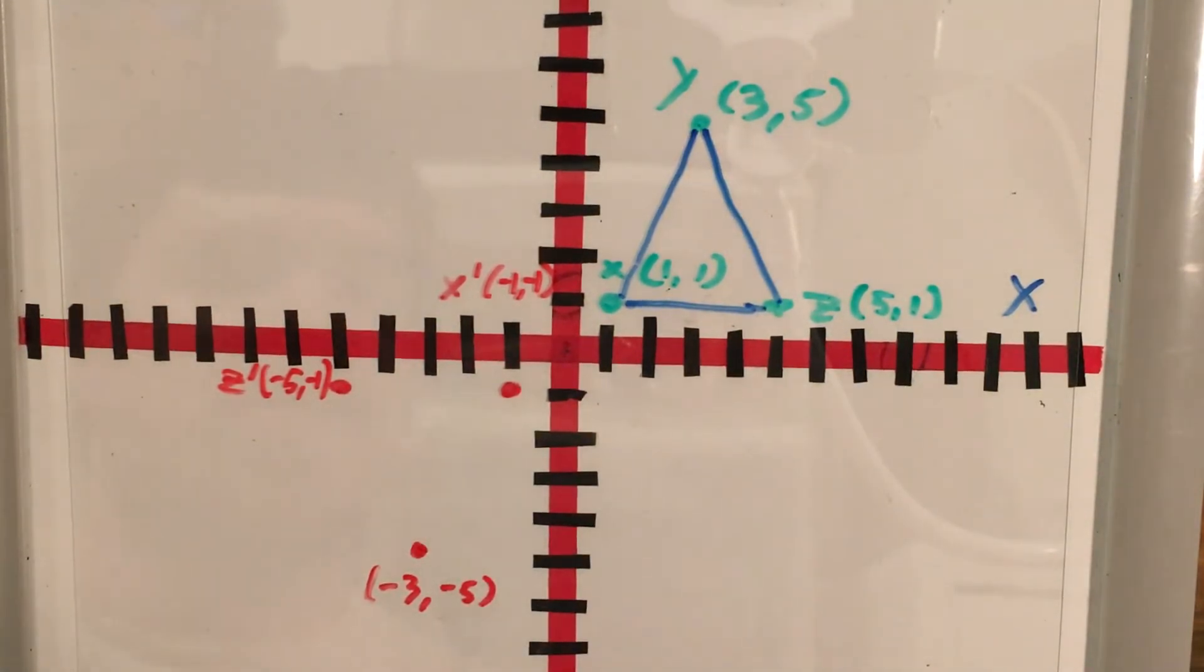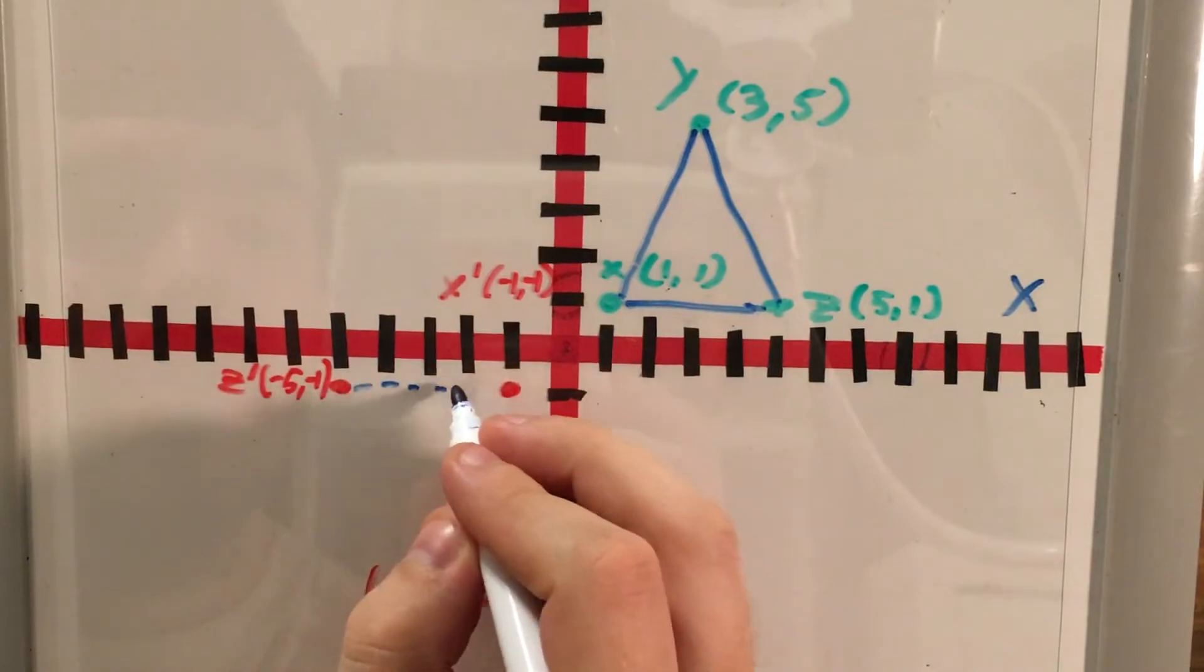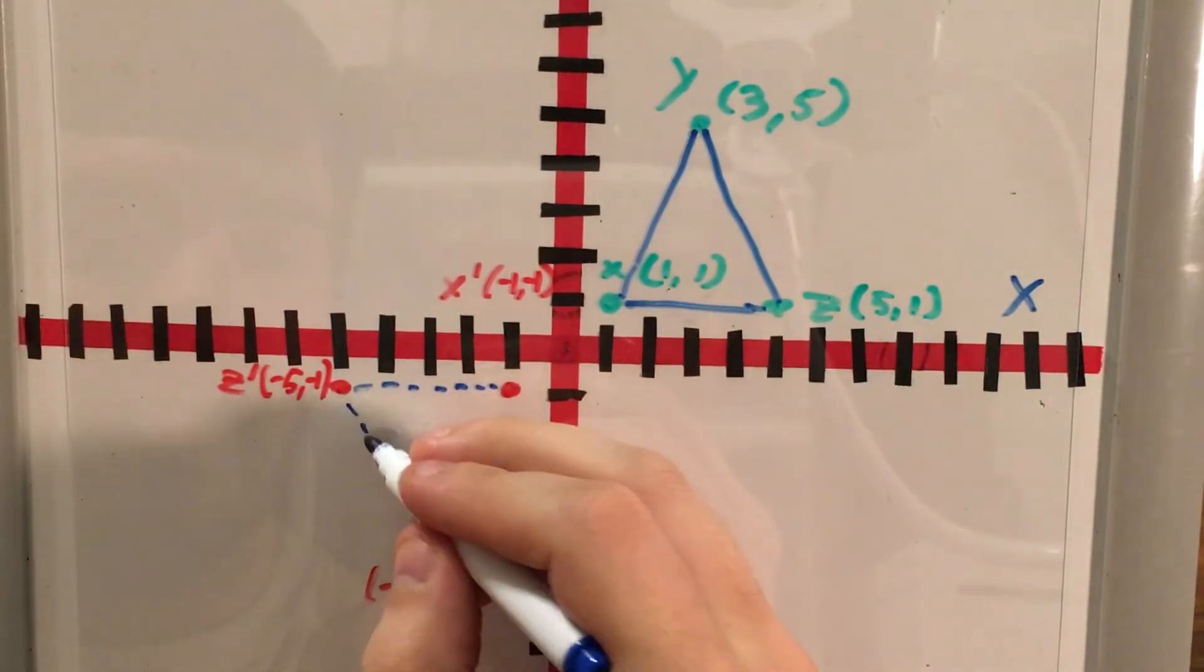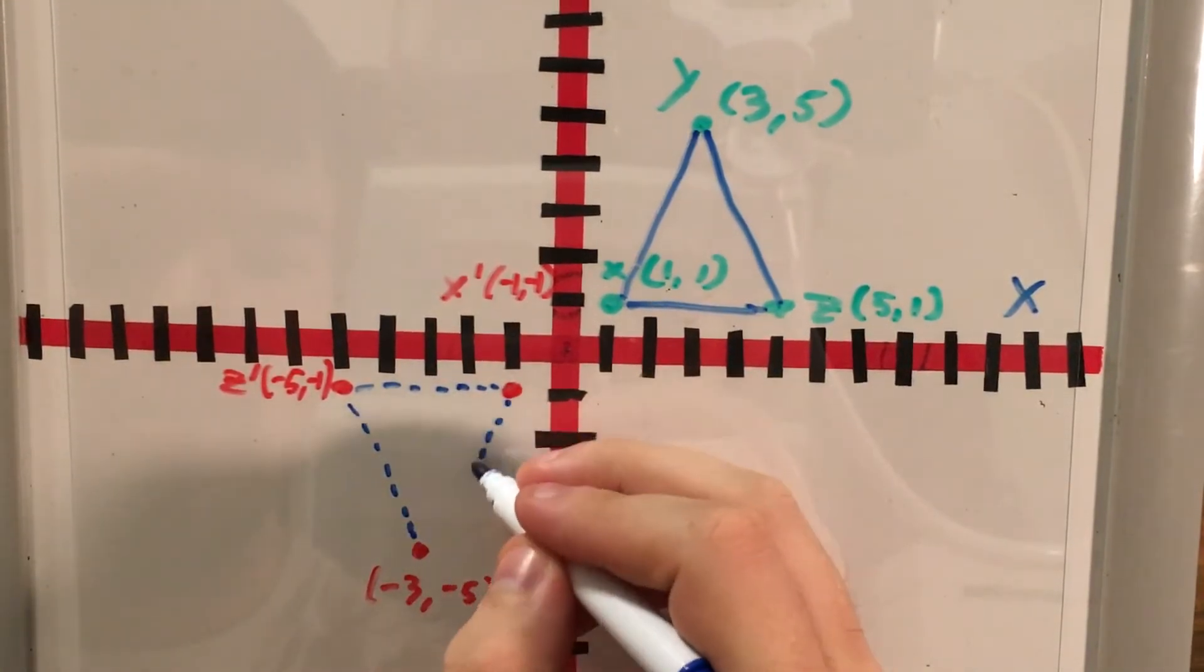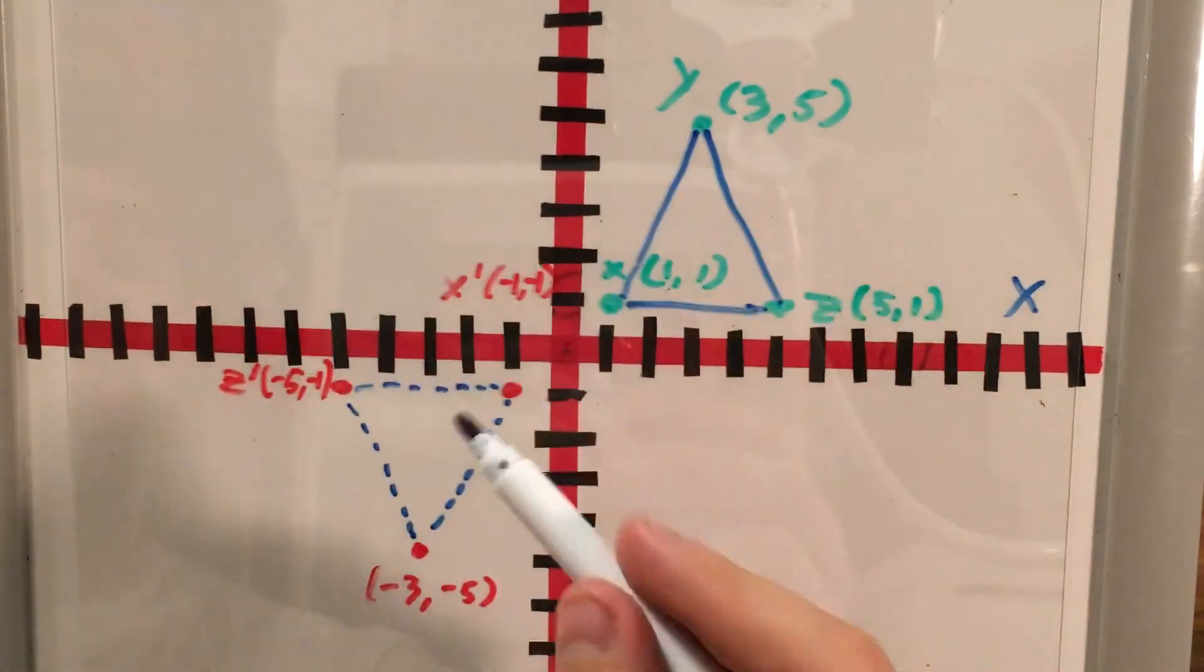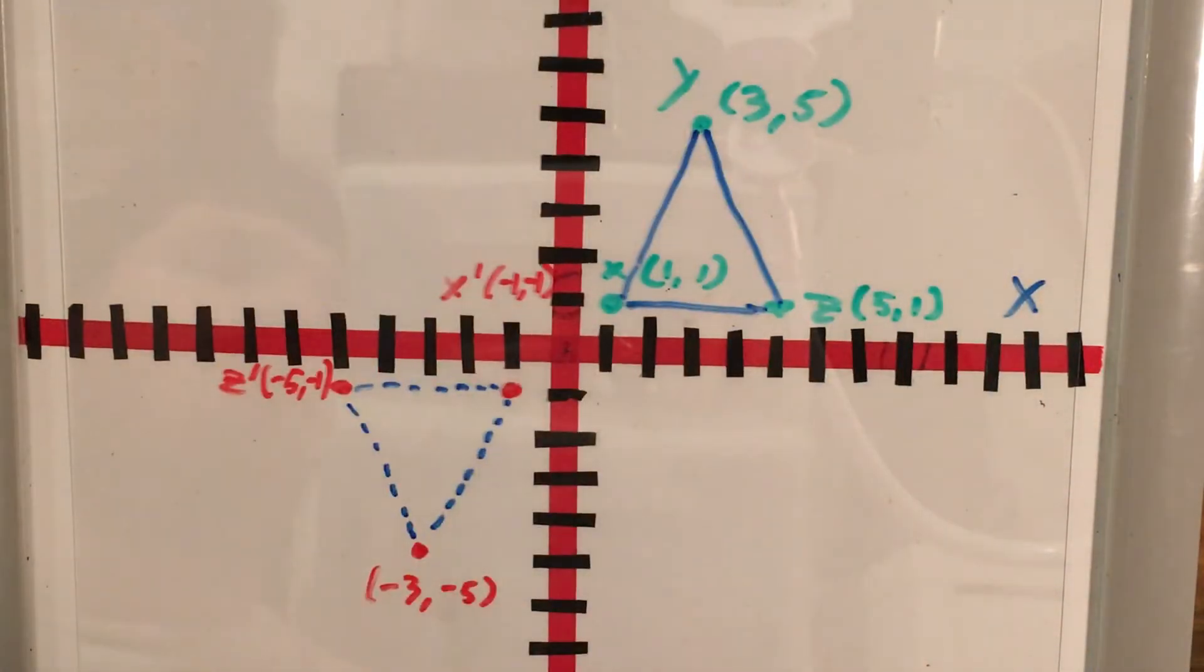And just to show that we rotated this correctly, here's my new triangle. It looks just like that one, except we took the whole thing and turned it around halfway.